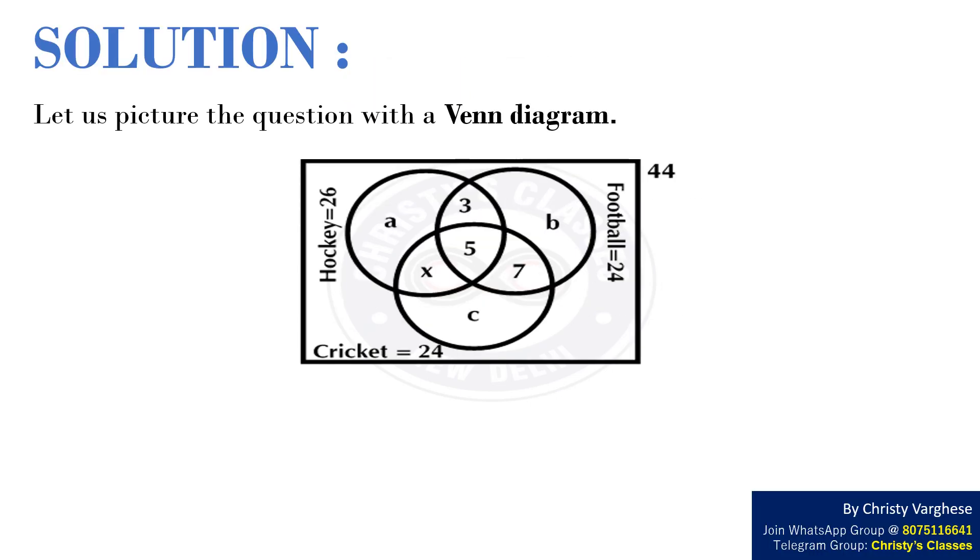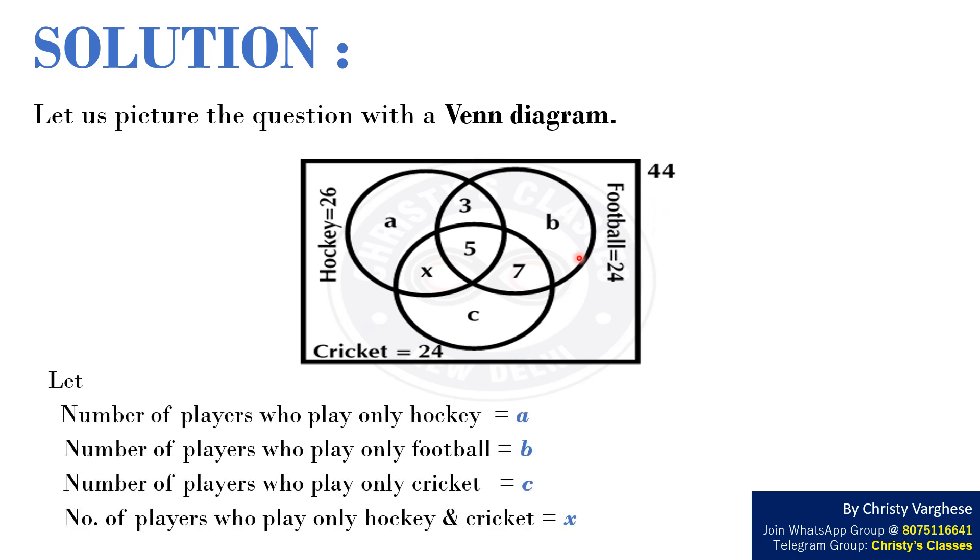Solution: Let us picture the question with a Venn diagram. Let the number of players who play only hockey be A, number of players who play only football B, number of players who play only cricket C, and number of players who play only hockey and cricket X.